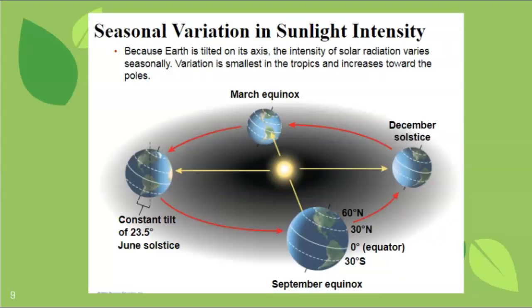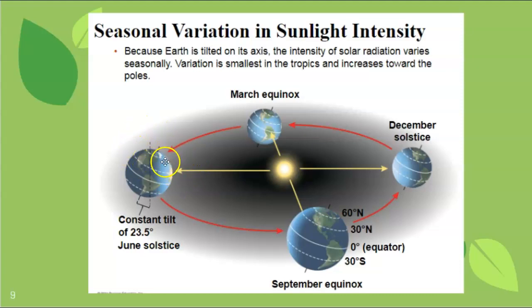A common misconception is that our seasons are caused by the earth's distance from the sun. Actually, the earth is on a tilt. Sometimes during the year the top part of the earth — the northern hemisphere — is facing toward the sun, making it summer there while the southern hemisphere has winter. At other times, like in December, the southern hemisphere is facing toward the sun, so they're having summer while we're having winter. That's why seasons are flip-flopped in the two hemispheres.